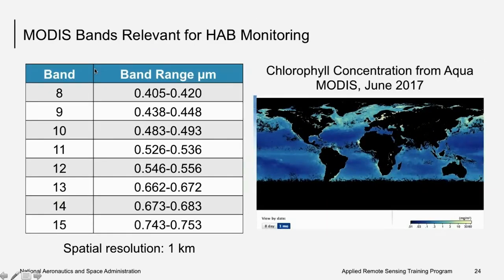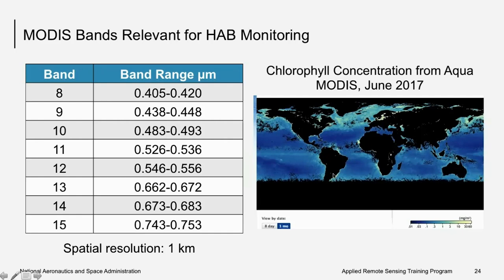Specific MODIS bands useful for HAB monitoring have 1 km spatial resolution and span blue, green, red, and infrared wavelength ranges. An example on the right shows chlorophyll concentration derived from MODIS data covering the global oceans, including water bodies such as the Great Lakes and Lake Victoria in Africa, demonstrating the broad coverage of this dataset.